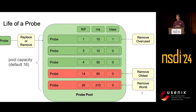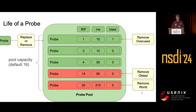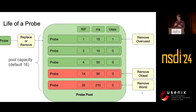Probes in the pool are generated asynchronously, and the pool has a limited size, typically 16. When a probe response arrives and there's room, it's added to the pool. If not, we replace an existing probe using several eviction mechanisms: we evict a probe that has exceeded a use count, we remove the oldest probe that has become stale, and we also sometimes remove the worst probe. By applying these three policies we mitigate various issues.